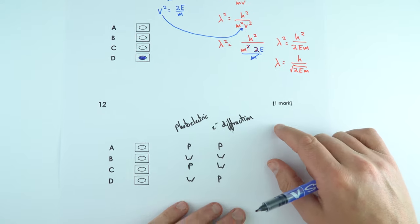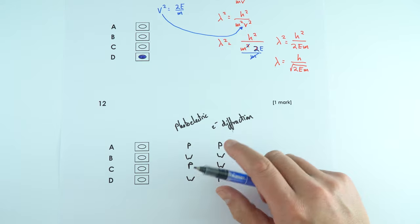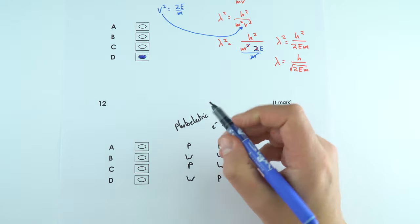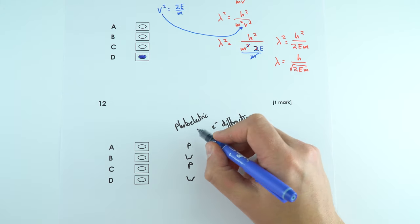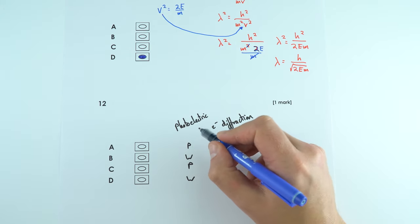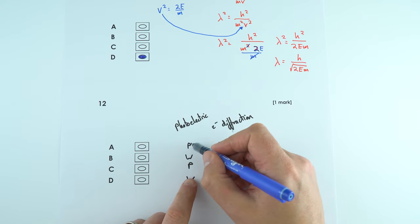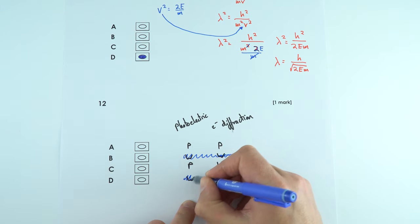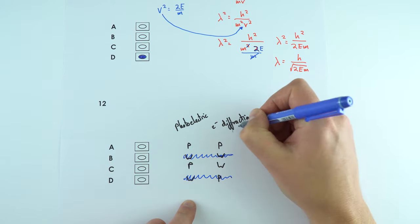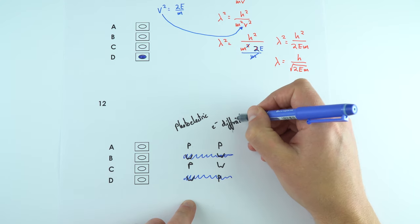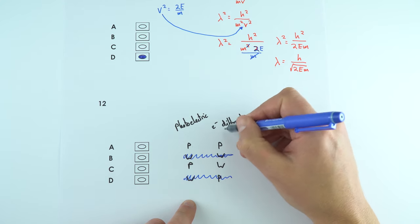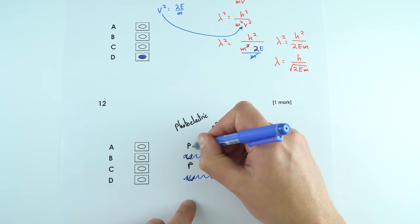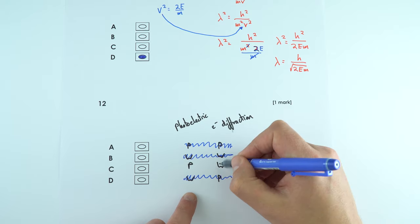Question 12: which links both the photoelectric effect and electron diffraction to wave and particle properties? The photoelectric effect shows the particle-like property of light, so the answer must include 'particle' for light — eliminating B and D. Electron diffraction shows the wave-like property of electrons — eliminating option A which shows particle-like. The only correct answer is C.